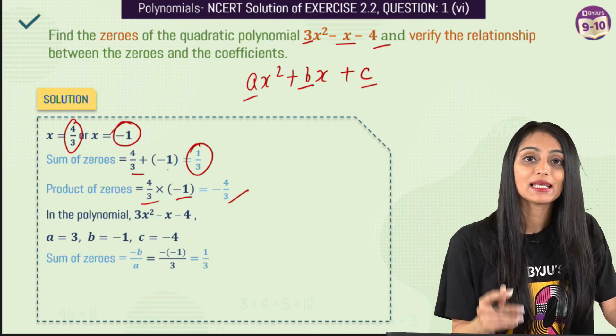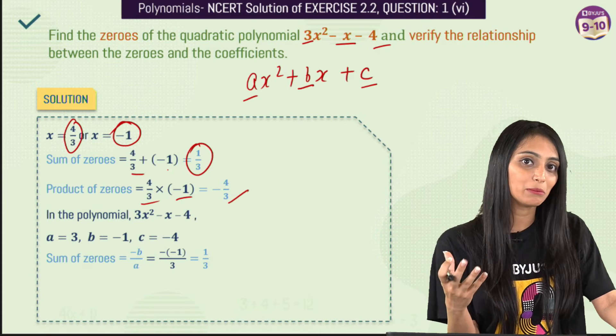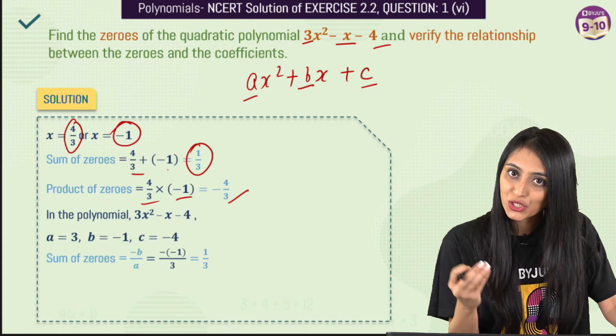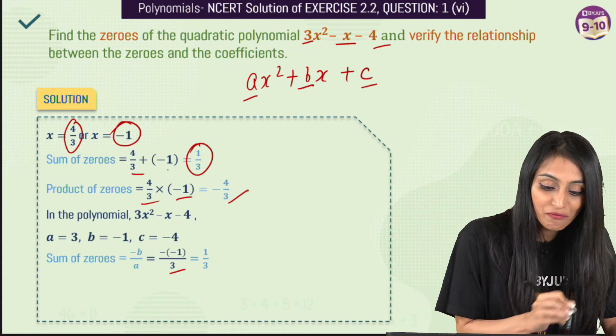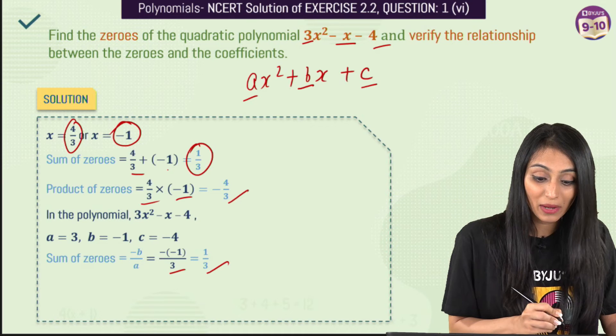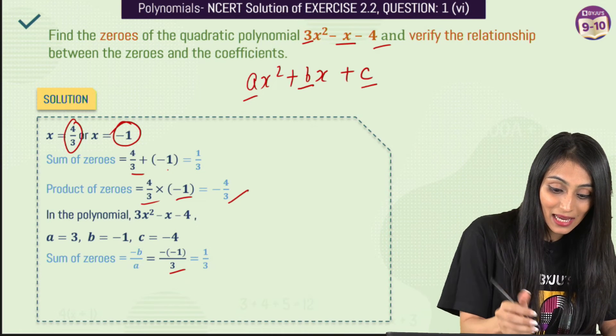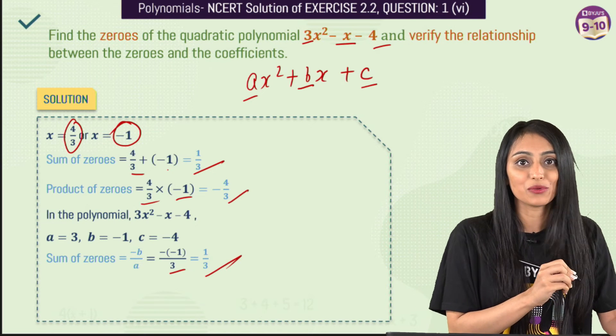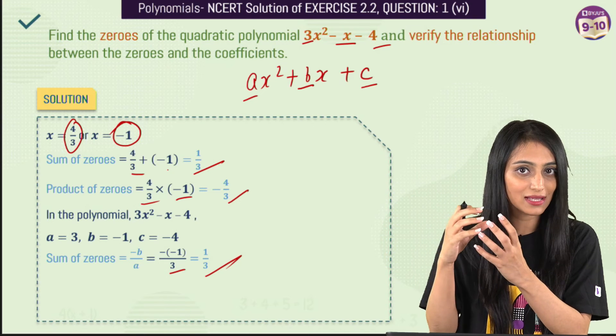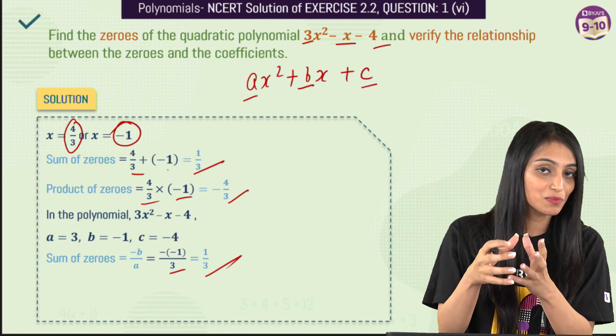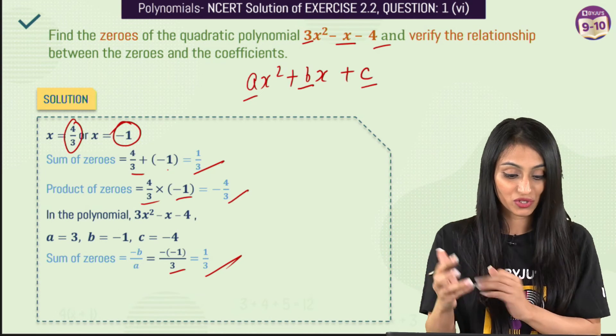Now what we will do here is simply we know that sum of zeros is -b/a. Let's substitute these values here. We get -(-1)/3 that's going to be 1/3 and you can see that this is same as the sum of these zeros. So the relationship over here verifies, the sum of zeros between the zeros and the coefficients.